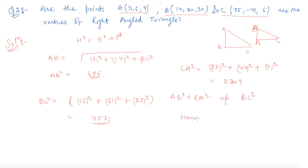Hence, the given points do not form a right-angled triangle. This is what we needed to determine — whether it is a right-angled triangle or not — and we concluded it is not. I hope you can now easily solve questions based on the distance formula. In the next lecture we will discuss another formula known as the section formula, so stay tuned.